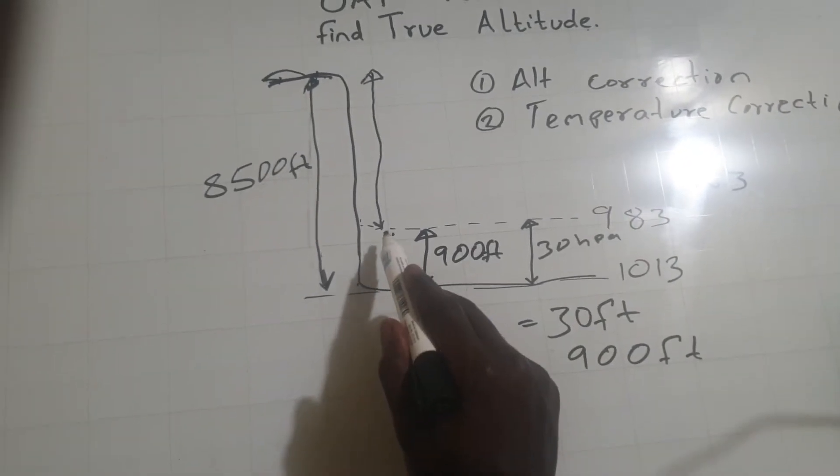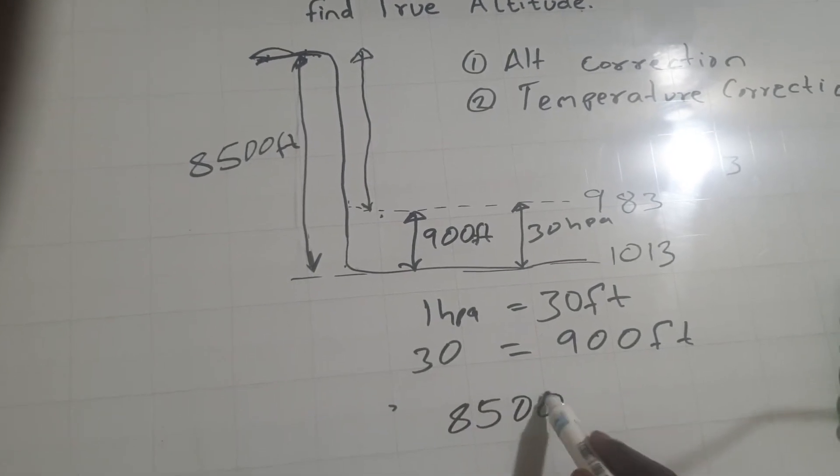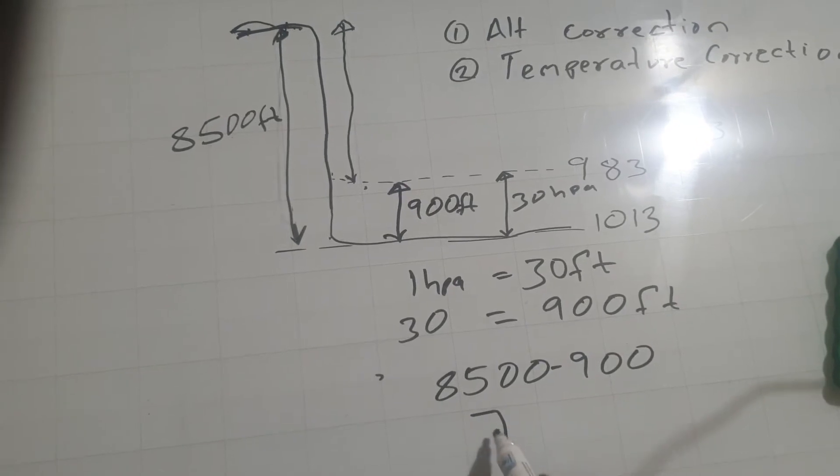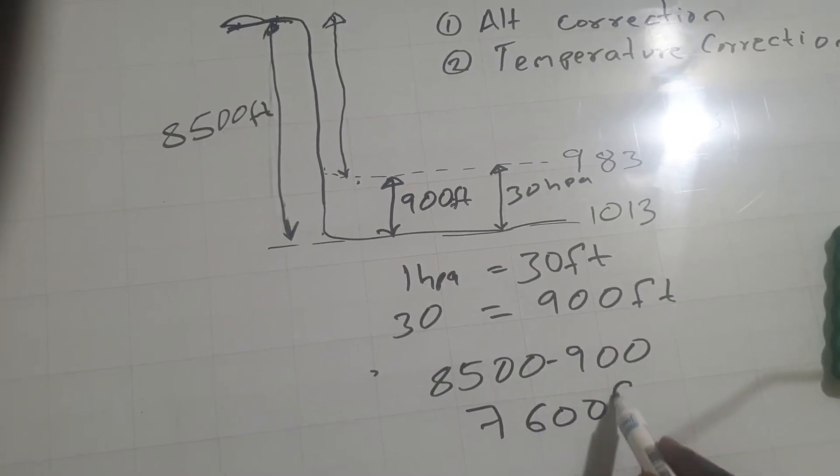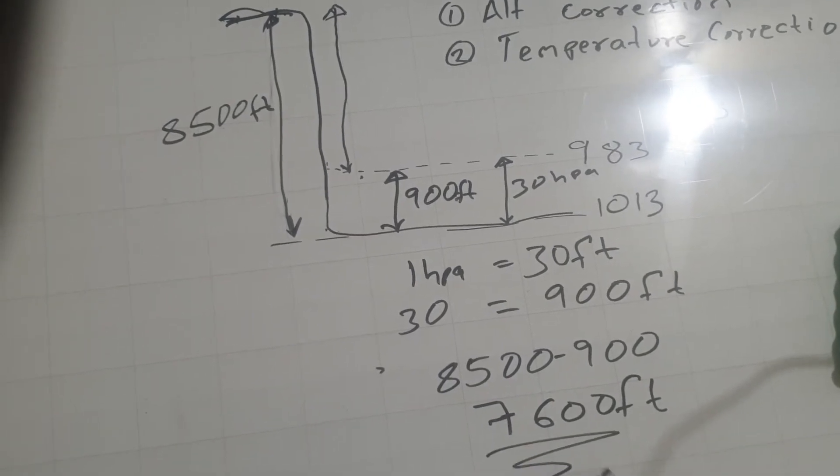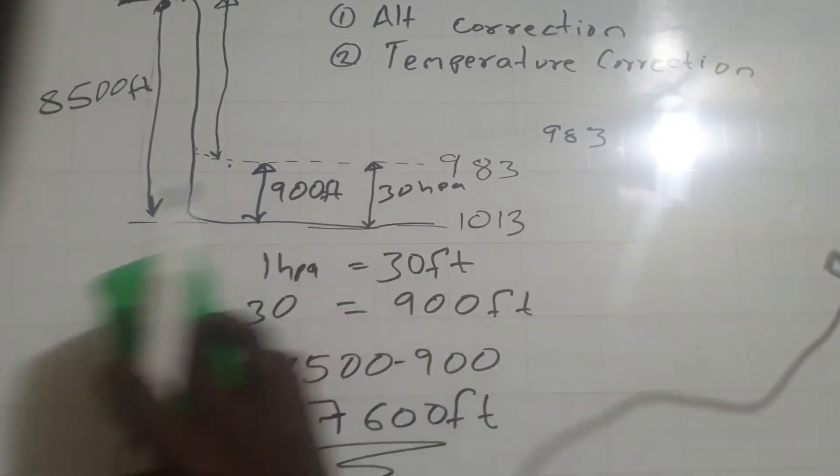So obviously this distance from here is 8,500 minus 900, so we get 7,600 feet. So this value is what we want to correct for the temperature change.